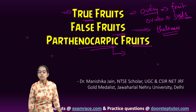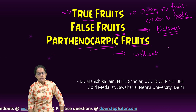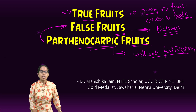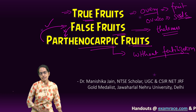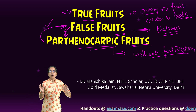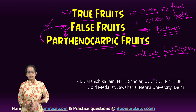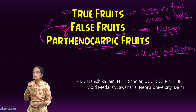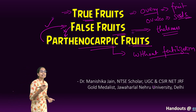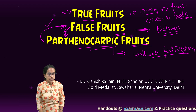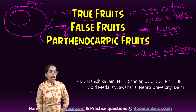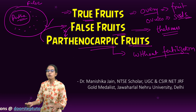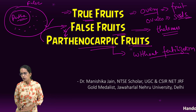Parthenocarpic fruits are those fruits that develop without fertilization. Note a very important assertion-reason question that can come up: all parthenocarpic fruits are false fruits — that is correct. But all false fruits are not parthenocarpic fruits. Parthenocarpic fruits are a subset of false fruits, but there are other false fruits where the ovary along with thalamus or inflorescence plays an important role in formation.